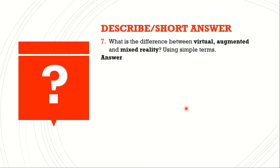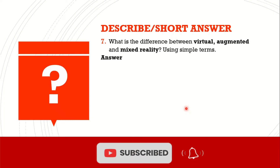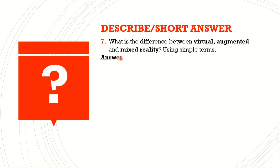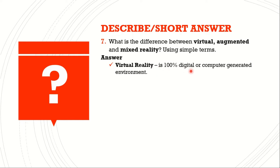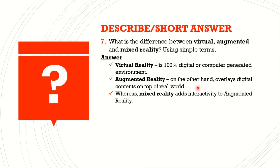Describe or give short answers. Question number seven: What is the difference between virtual, augmented, and mixed reality? Using simple terms — virtual reality is a digital or computer-generated environment which is 100% synthetic. Augmented reality overlays digital content on top of the real world. Whereas mixed reality adds interactivity to augmented reality in real time.